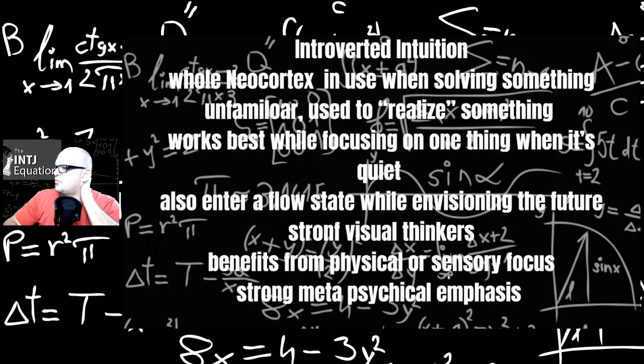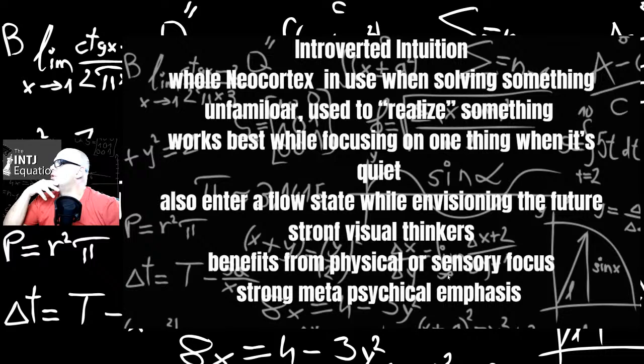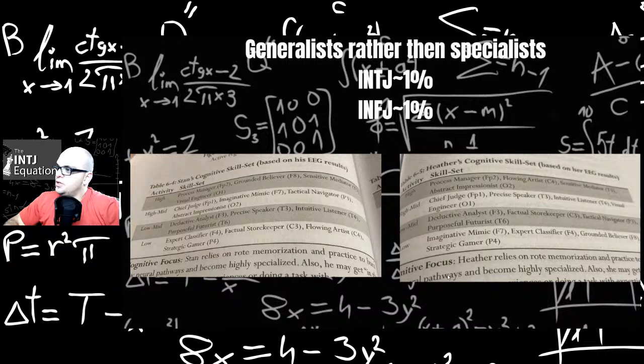And Ni, introverted intuition. I think this is what's interesting about Ni users. They use the whole neocortex when solving something unfamiliar. So basically, other types, what they do is their bread and butter. But what Ni users are good at is solving unfamiliar problems. So they get that flow state, that zen state, where the whole neocortex lights up with blue waves when they're doing something they're not familiar with. Trying to solve a problem, basically. And it's used to realize something works best while focusing on one thing at a time. And when it's quiet, also in a flow state when envisioning the future. Strong visual thinkers benefit from physical or sensory focus. Strong metaphysical impetus. And INTJs, INFJs make up about 1% of the population.